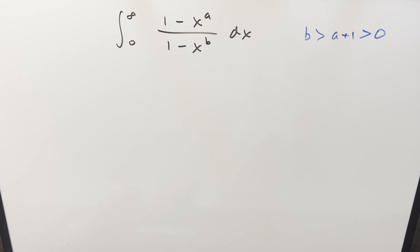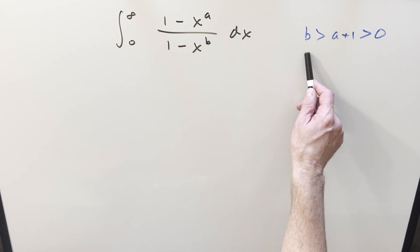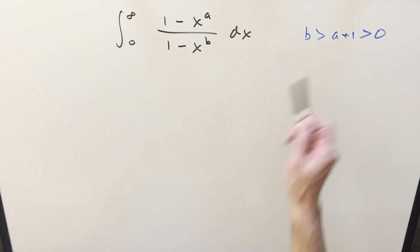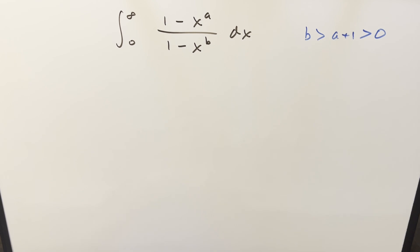We have another integral: the integral from 0 to infinity of (1 minus x to the a) over (1 minus x to the b) dx. We have the condition that b must be greater than a plus 1, and a plus 1 must be greater than 0.